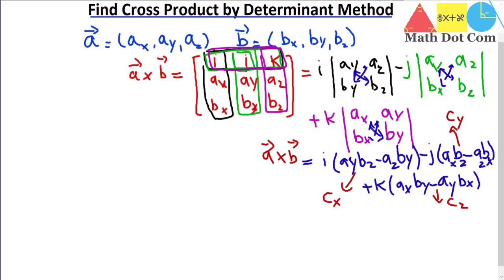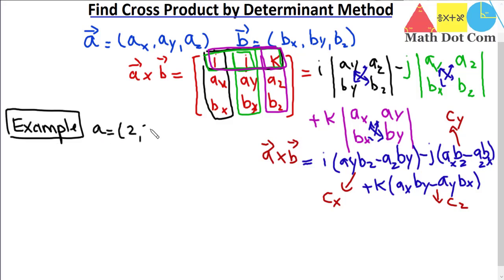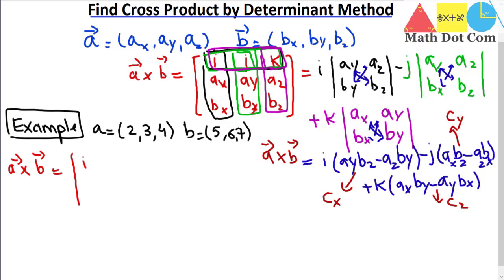The example is: vector a = (2, 3, 4) and vector b = (5, 6, 7). Let's use the determinant method to find the cross product. We set up the matrix: first row i, j, k; second row 2, 3, 4; third row 5, 6, 7.